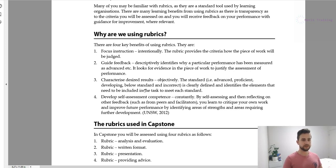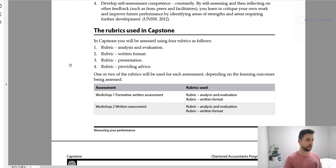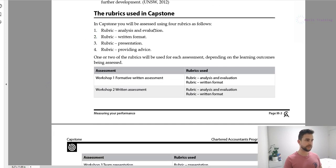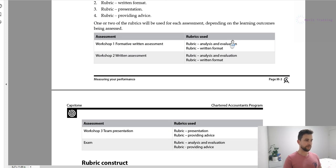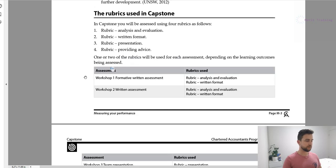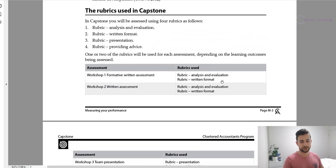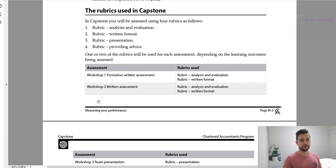Rubrics also allow markers to give feedback really clearly. If you got four out of five and you ask the capstone marker why you didn't get five out of five, they can point exactly to the rubric and say it's because you didn't do this. There are four rubrics in the capstone module: analysis and evaluation, written format, presentation, and providing advice. Some apply to written assessments, some to speech assessments. Workshop 1 doesn't assign a mark but you do a practice written assessment just to get used to the rubric and know what to expect at Workshop 2.